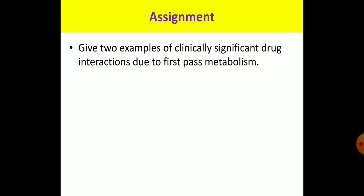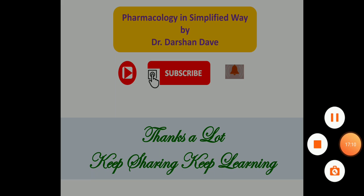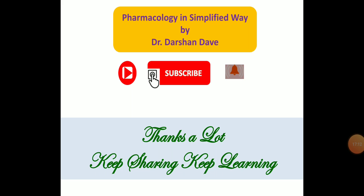The second assignment: if a drug with high first-pass metabolism in the liver has been selected for a particular condition, identify the different ways by which one can avoid that first-pass metabolism. That concludes today's session. Next time we will discuss another interesting topic of general pharmacology. If you like this channel, please subscribe and share it. Thanks a lot.